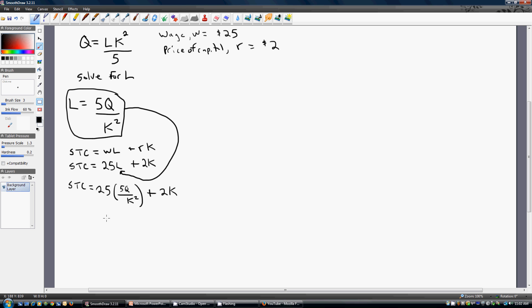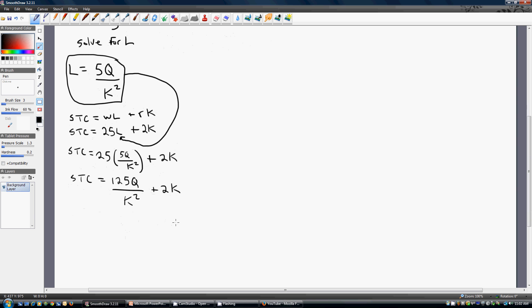So here's our short-run total cost equation. I'll just simplify that by multiplying 25 times 5. And we're left with this result, short-run total cost as a function of Q and K.